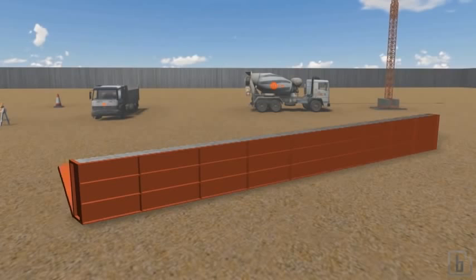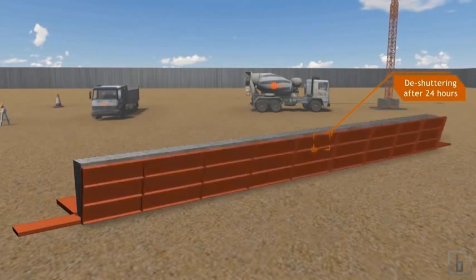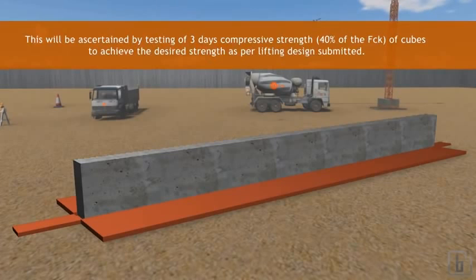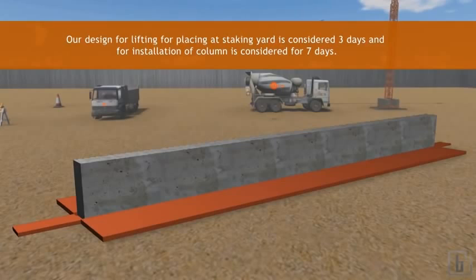Side shutter shall be removed after 24 hours while bottom shutter shall be kept three days after casting. This will be ascertained by testing of three days compressive strength - 40% of the FCK of cubes - to achieve the desired strength as per lifting design submitted.